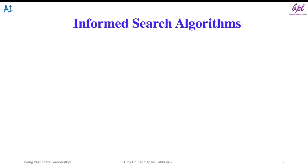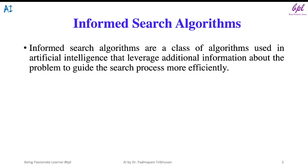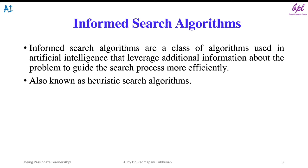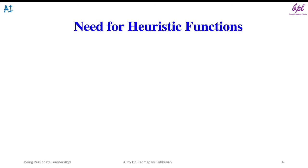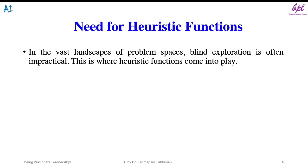Let us start with what are informed search algorithms. Informed search algorithms are a class of algorithms used in artificial intelligence. These algorithms leverage additional information about the problem to guide the search process more efficiently. They are also known as heuristic search algorithms. These algorithms incorporate heuristic information — additional knowledge represented by heuristic functions — to make more informed decisions during the search process, improving the efficiency of finding solutions in complex problem spaces.